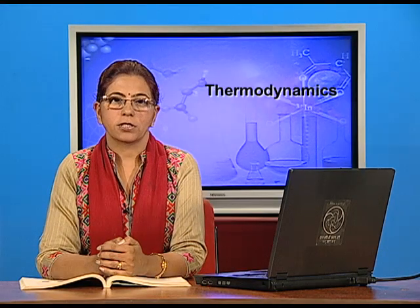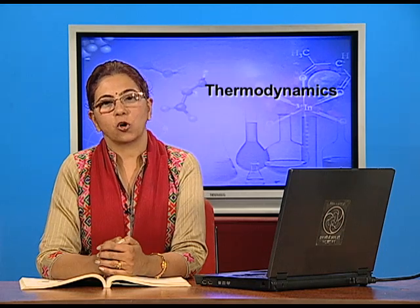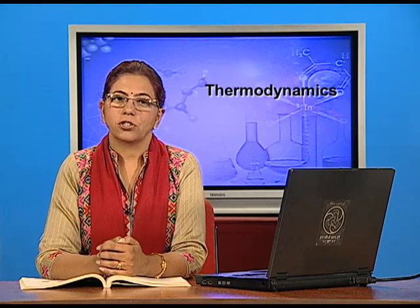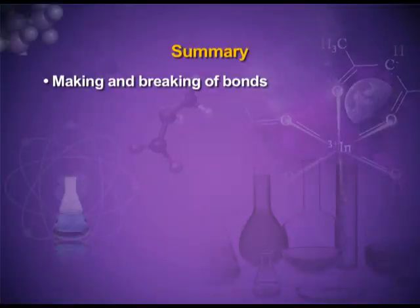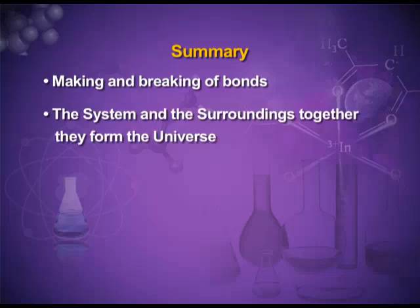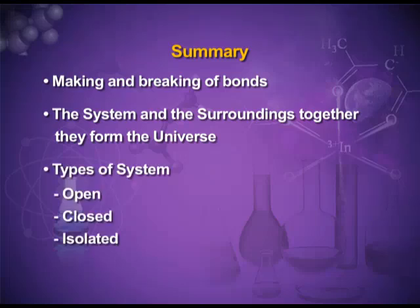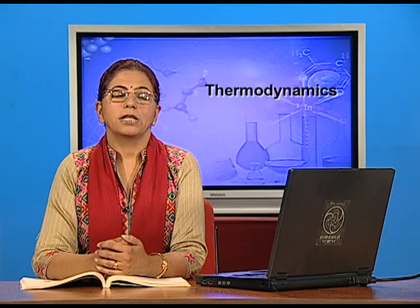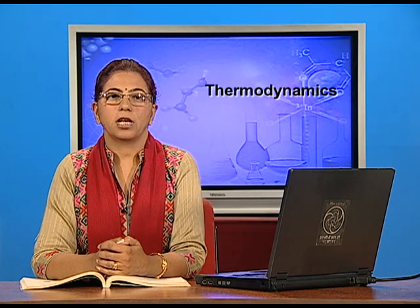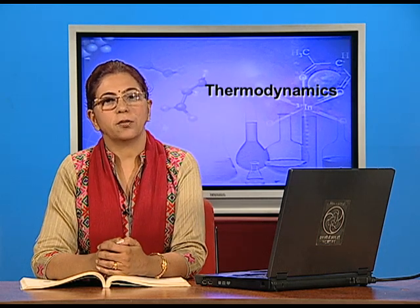Today we have studied that in a chemical process there is either evolution or absorption of energy, due to the making or breaking of bonds. We also studied about the system and surroundings — together they form the universe — and the types of systems: open, closed, and isolated. In the next class, we will study about the different thermodynamic parameters.